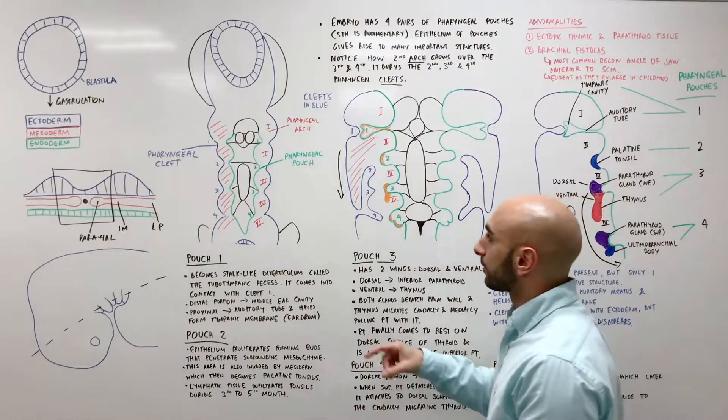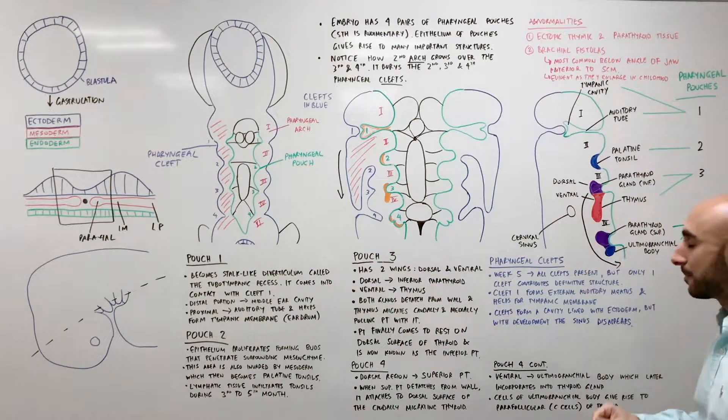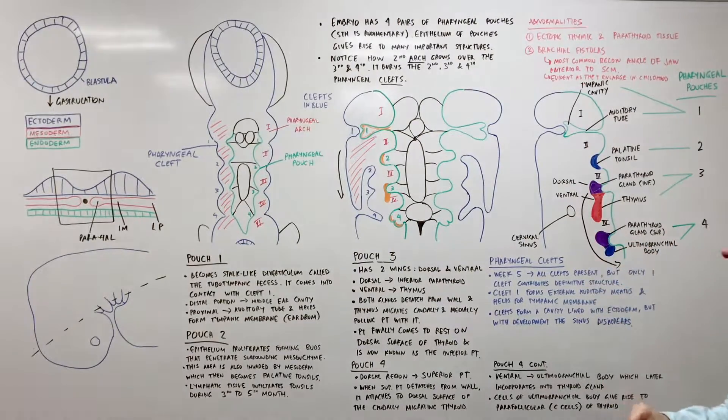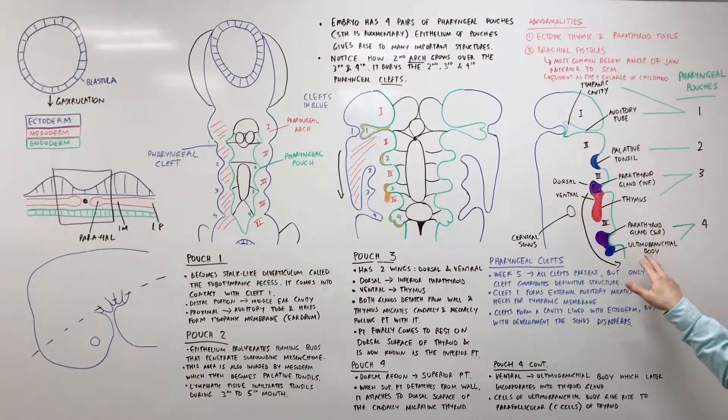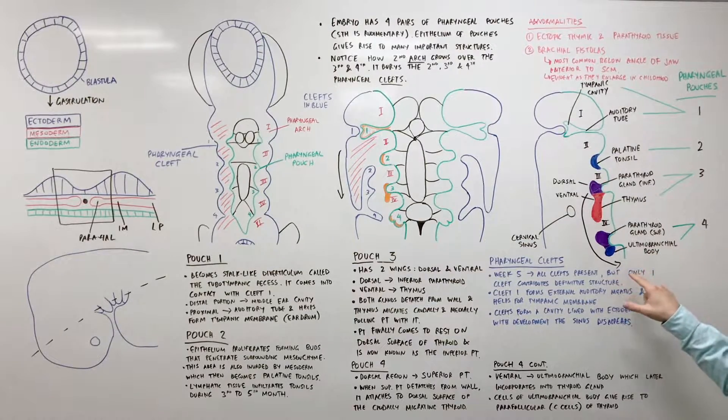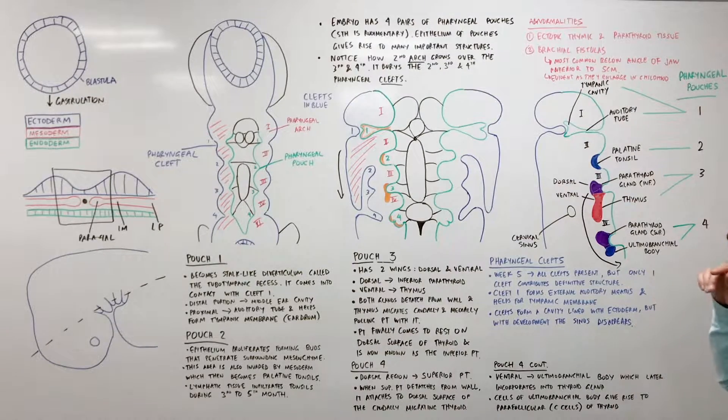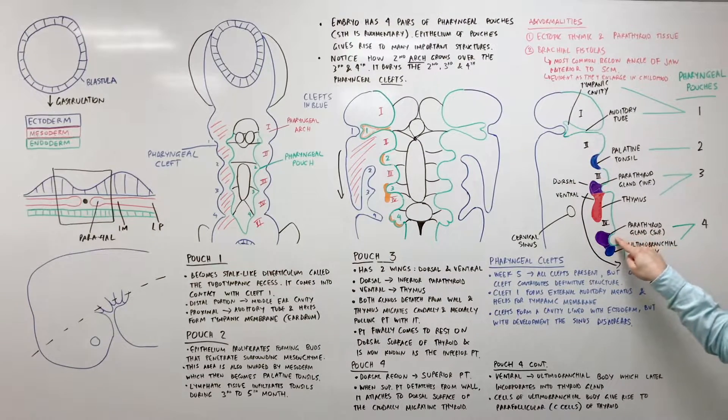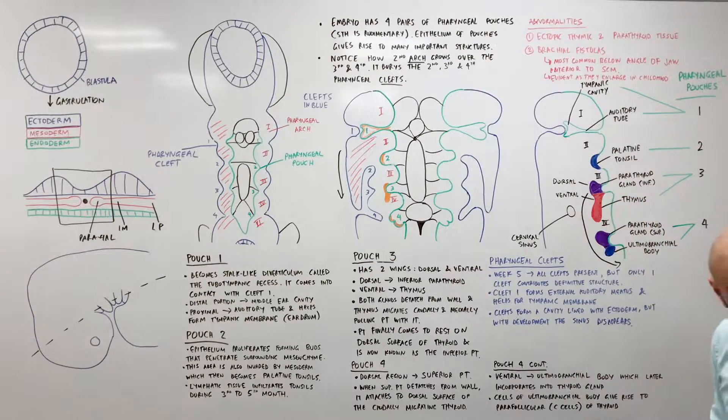Pouch 4, step 1, step 2, step 3. Pouch 4 becomes 2 things too. The dorsal part becomes the superior parathyroid gland, the ventral part becomes the ultimobranchial body. Don't let that big word scare you. But first, why is the superior parathyroid gland initially inferior to the inferior parathyroid gland? It doesn't make sense. It's because it migrates less.